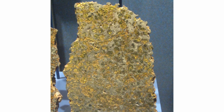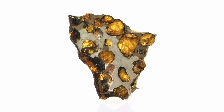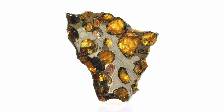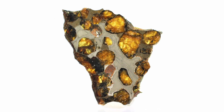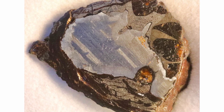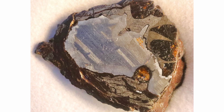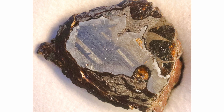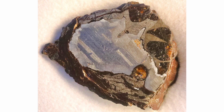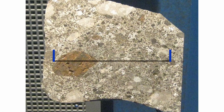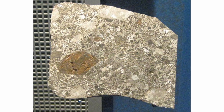Pallasites are thought to be samples of the boundaries between a metal core and the silicate olivine-rich mantle around it. If this is the case, they could tell us a lot about the formation of Earth and other terrestrial planets. However, other scientists think there are very few olivine-rich meteorites in the asteroid belt and too many pallasite meteorites for them all to have come from a core-mantle boundary. These formations may also be formed by impact melting.